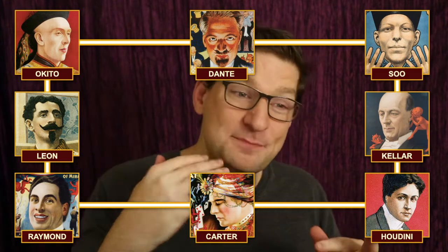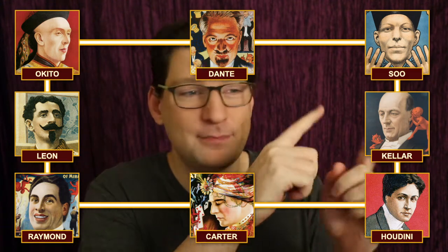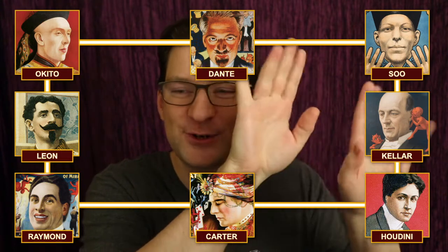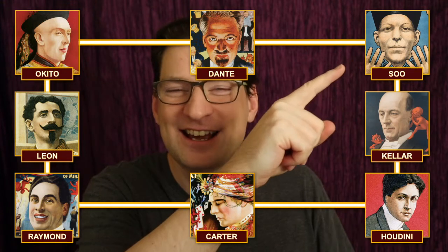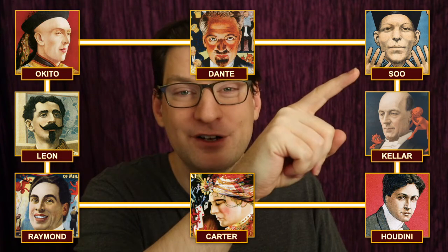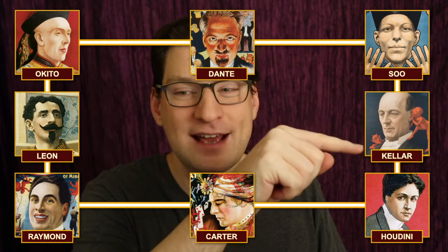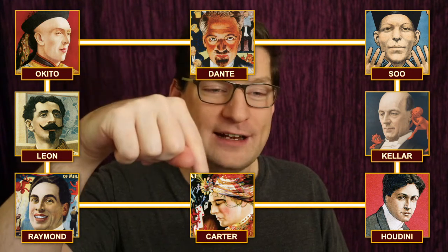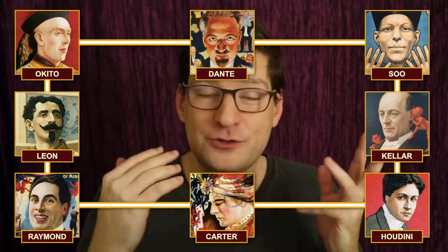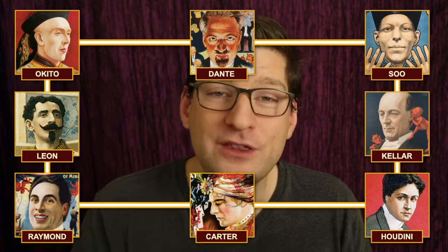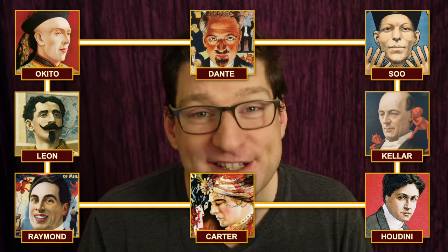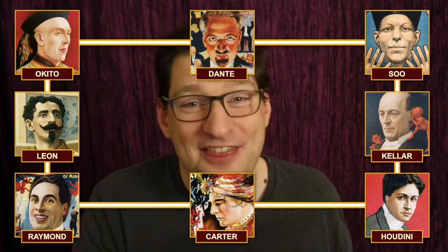And we're going to spell the names as we go. So, for example, if I start on Sue, I'll put my finger on Sue. He's got his ten assistants. We're going to spell one square for each letter, and we'll move our finger along. So there will be S, O, O, and we'd end up here on Carter. So that's it. You just move one square with your finger for each letter that you spell. Now, as Dante might say, we're going to Sim, we're going to Sala, and then we're going to Bim.